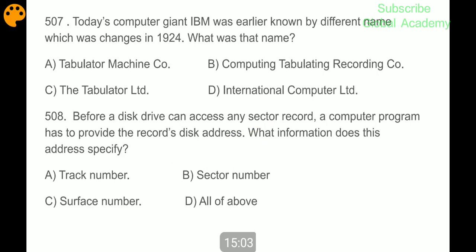Today's computer giant IBM was earlier known by different names which was changed in 1924. What was that name? Computing Tabulating Recording Company.